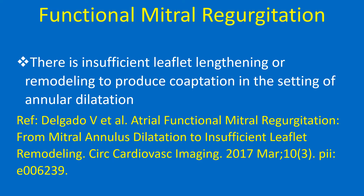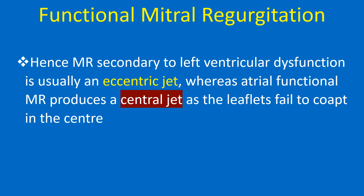In atrial functional MR, there is insufficient leaflet lengthening or remodeling to produce coaptation in the setting of annular dilatation. Hence, MR secondary to left ventricular dysfunction is usually an eccentric jet, whereas atrial functional MR produces a central jet as the leaflets fail to coapt in the centre.